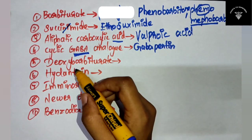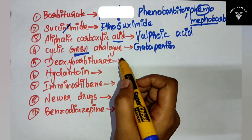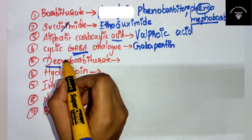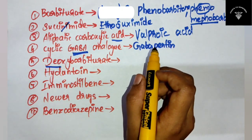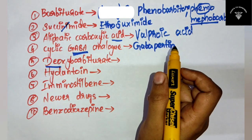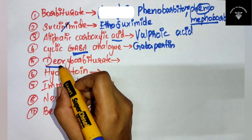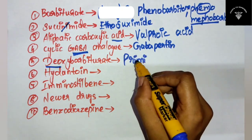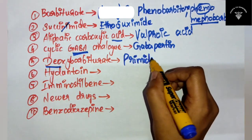And next one is deoxybarbiturate. You can remember: 'DO' is your deodorant, and primarily the deodorant is done first - he sprays deodorant on his son because he will be stinky and sweating. So you can remember as primarily the deodorant is done - that is primidone.